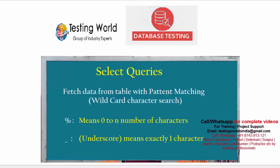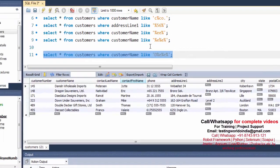Welcome to the testing world. In the previous session we saw how we can go for pattern matching using the percentage symbol. Now I'll show you how we can use underscore and what underscore means — it means exactly one character. We are going to make some patterns using underscore, moving to the database now.